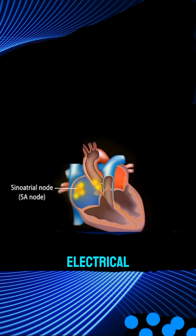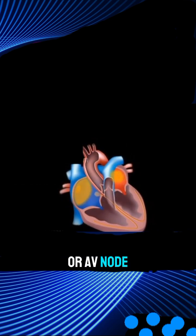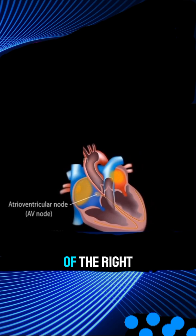Electrical impulses travel from the SA node throughout the atria, stimulating them to contract. The atrioventricular or AV node, located on the other side of the right atrium near the tricuspid valve, carries electrical impulses.